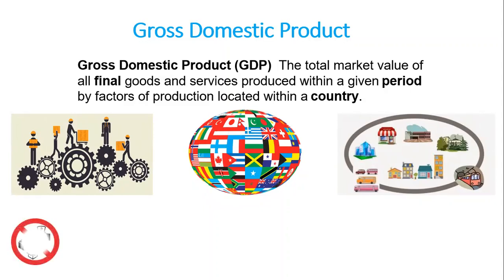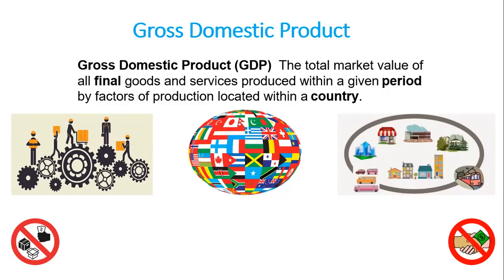GDP excludes used goods and paper transactions — it is concerned only with new or current production. Old output is not counted in current GDP because it was already counted when it was produced. Also, GDP does not count transactions in which money or goods change hands; it counts only new goods and services that are produced.